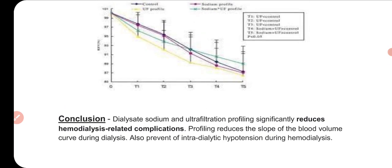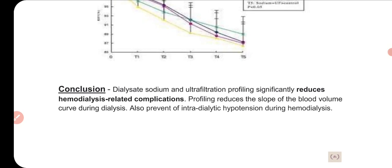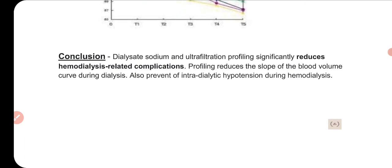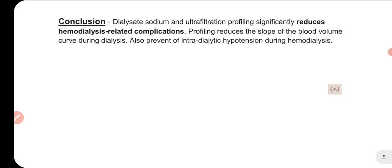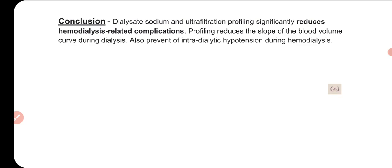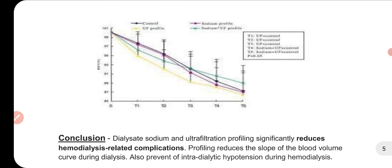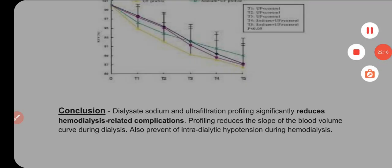In conclusion, sodium and ultrafiltration profiling significantly reduce hemodialysis-related complications, mainly hypotension. The profile reduces the slope of blood volume decline during dialysis and prevents intra-dialytic hypotension. If we use UF profile or sodium profile, we can maintain vascular stability and manage other problems. That was the whole video on sodium profiling — if anything was wrong, please let us know. Thank you.